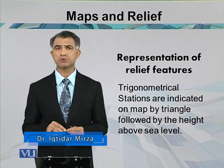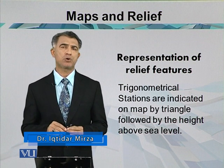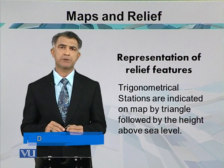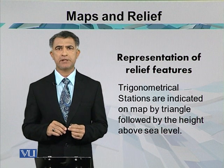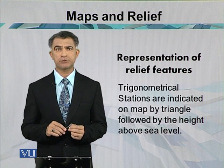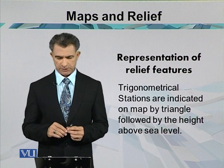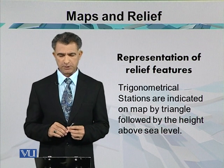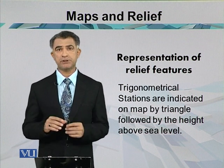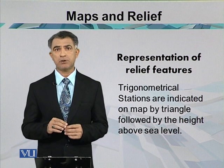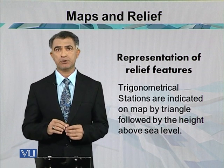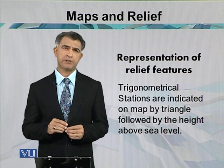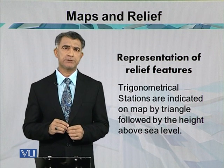With the help of an automatic level, we can check the elevation of the area. Today, GPS is most commonly used, which not only deals with the height of the area but also gives us the latitudes and longitudes. In trigonometrical stations, the map is made by the process of certain surveys, and these surveys are actually linked with the height of the region.